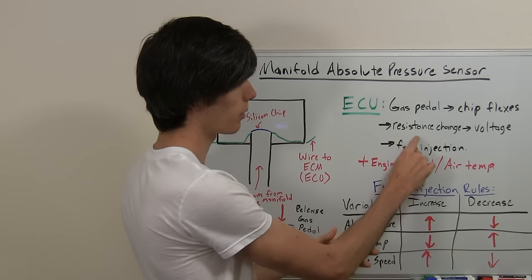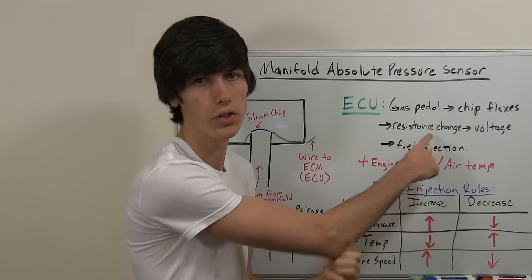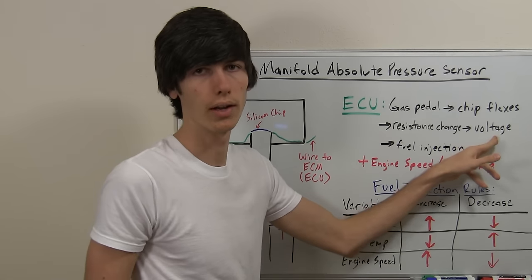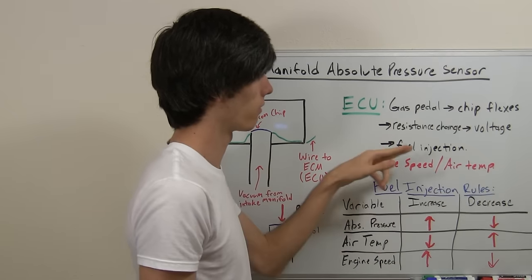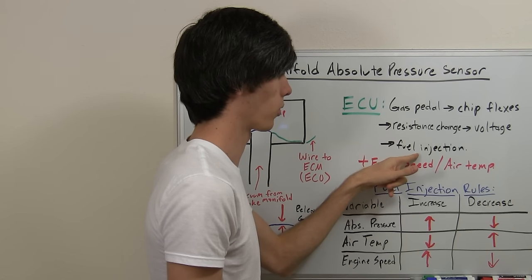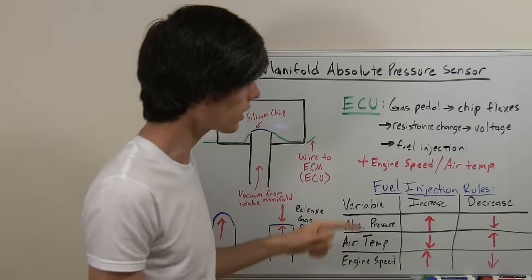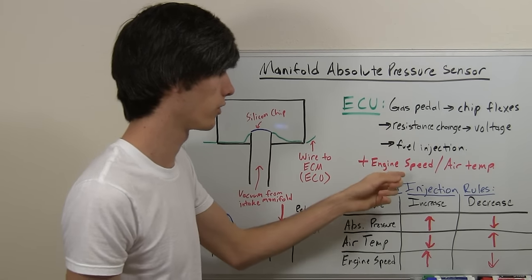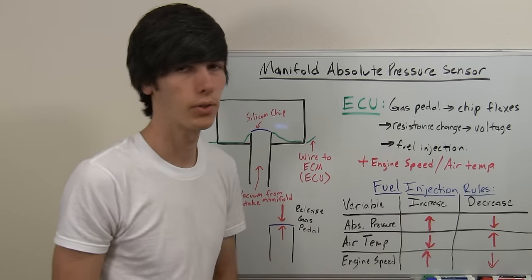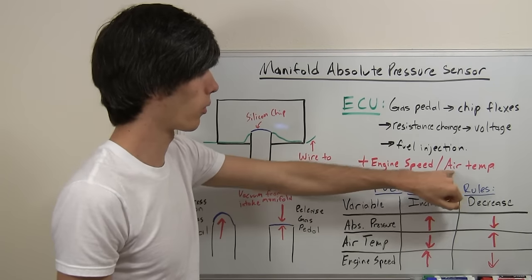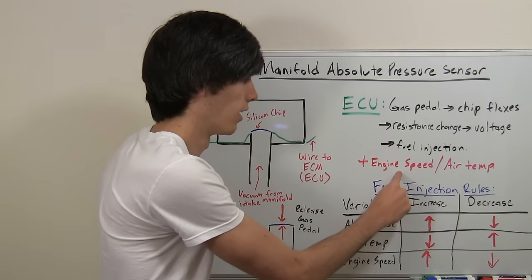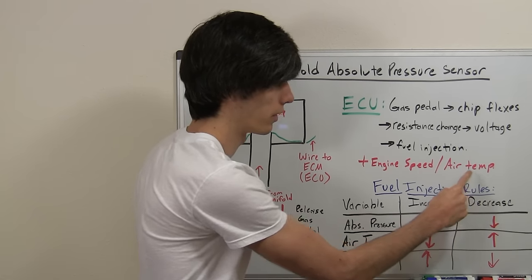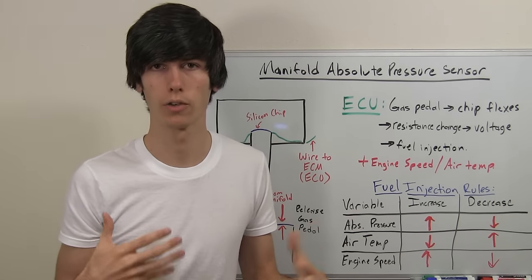Now when it flexes the silicon chip it's going to cause a resistance change. The ECU takes that resistance change and translates it into a voltage change. With that voltage change it knows that it needs to either inject more fuel or inject less fuel. Now it's going to use the MAP sensor in addition to an engine speed sensor and an air temperature sensor. These are important because you have to know how many power cycles you've got in order to know how much fuel you're burning and you also need to know the temperature of the air because cooler air is more dense and holds more oxygen.